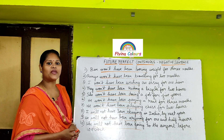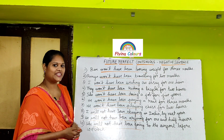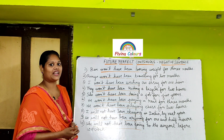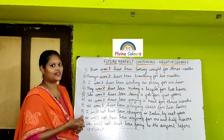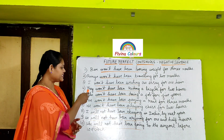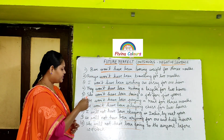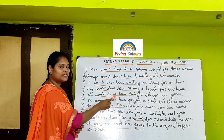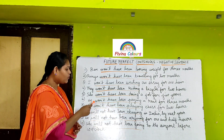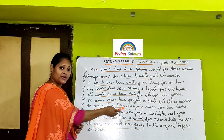In the first sentence, Ben is the subject, won't is the negative, have been are helping verbs, and losing is the present participle. Ramya is the subject, won't is the negative contraction of will not, have been are helping verbs, and traveling is the present participle. I is the subject, won't is the contraction of will not, have been are helping verbs, and writing is the present participle. They is the subject, won't is the negative form, have been are helping verbs, and riding is the present participle. She is the subject, won't have been is the formula — won't is the negative, have been are helping verbs, and doing is the present participle. He is the subject, won't is the contraction of will not, have been are helping verbs, and paying/playing is the present participle.